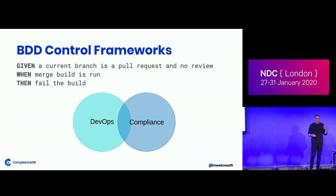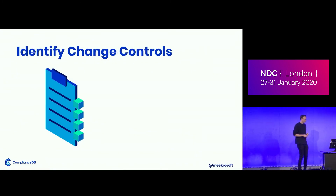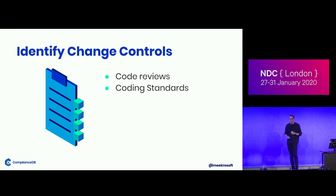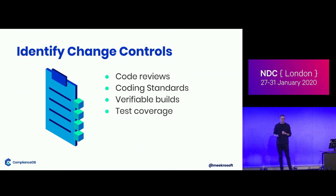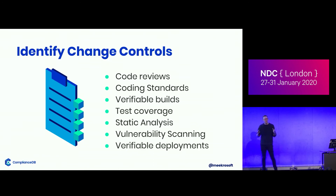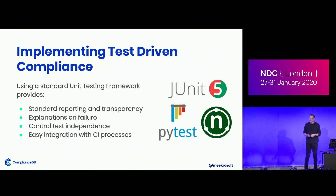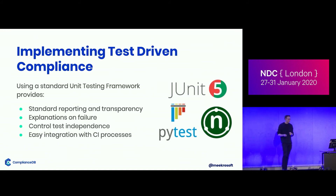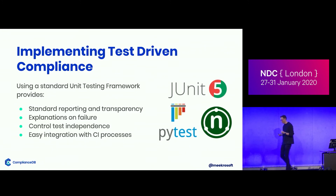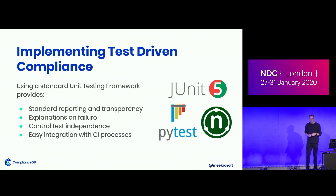BDD goes a step further and says once you have these examples, once you've got people talking together and have agreed on the way to do it, you can start to automate the tests as well. The kinds of controls you might come up with are things like: code reviews must be implemented, coding standards must be followed, verifiable builds, test coverage, static analysis, vulnerability scanning. All of this stuff is things you can test for automatically. Once you've defined your criteria, you can take those controls and automate them. And the best way to do that is with a unit testing framework — a fantastic tool for defining tests you want to run as part of your pipeline. It gives you standard reporting and transparency, explanations on failure, and control test independence. So if one compliance control fails and all the others pass, you can see exactly how you're out of compliance. And of course it's very easy to integrate with your CI processes.